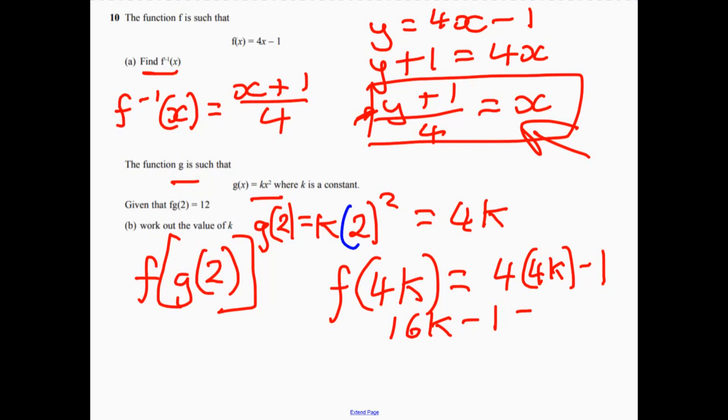Now we know the whole thing is equal to 12. So if we add 1 to both sides, 16k equals 13, divide by the 16.